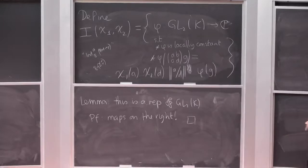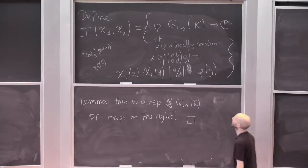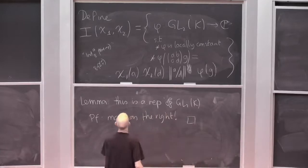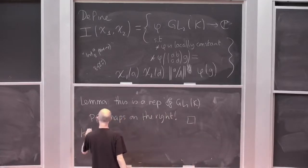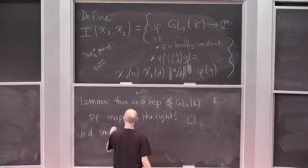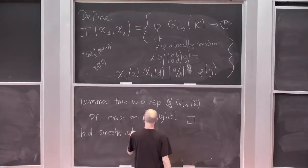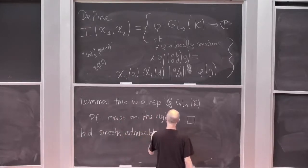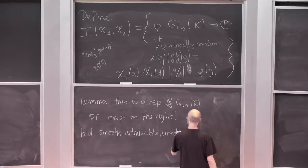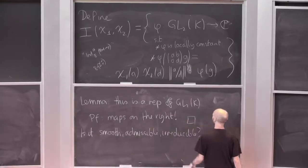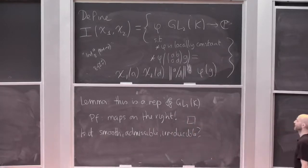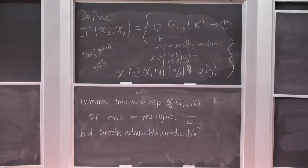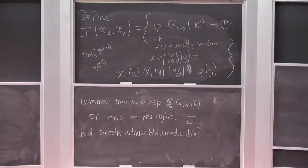But now what we really want to do is prove this is of the kind we've been talking about. Is it smooth? Is it smooth, admissible, and irreducible? Well, those are interesting questions. It's not always irreducible, in fact, but it is going to be smooth and admissible.